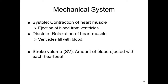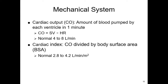Stroke volume is the amount of blood ejected with each heartbeat and is one part of our cardiac output — basically the amount of blood pumped by the ventricle in a minute. We take the stroke volume multiplied by the heart rate to get cardiac output. Normal is four to eight liters per minute. There's also the cardiac index, which relates cardiac output to body size, but in NCLEX we're more concerned with cardiac output, meaning stroke volume times heart rate.